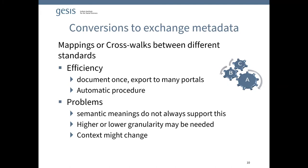This is called doing mappings or crosswalks. We have created several mappings that can be done automatically, saving significant time and effort — you can document once and publish in many portals. The problem is that semantic meanings are often difficult to map; not everything can be mapped to everything else, so we need to decide on the level of granularity at which mapping takes place, and sometimes we lose some information. But it's still better to have a partial automatic mapping than to do things manually every time.